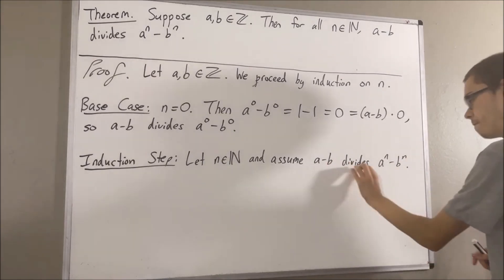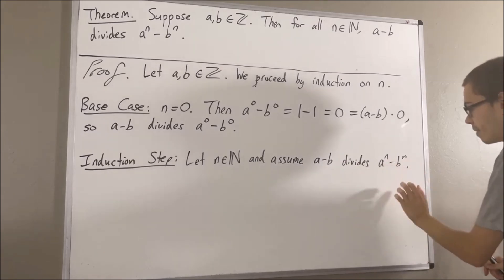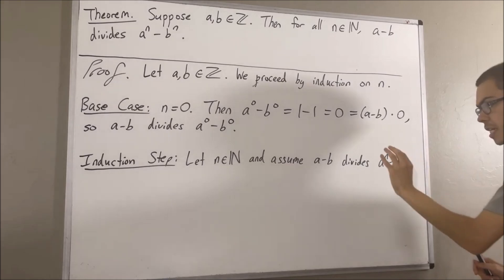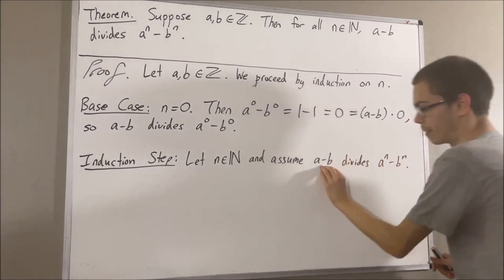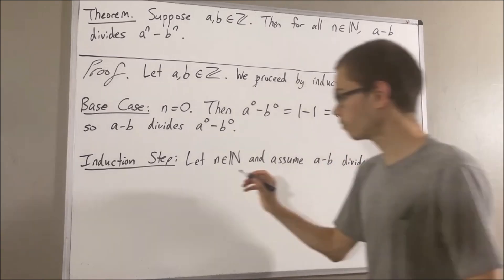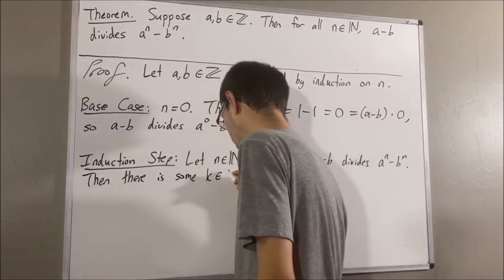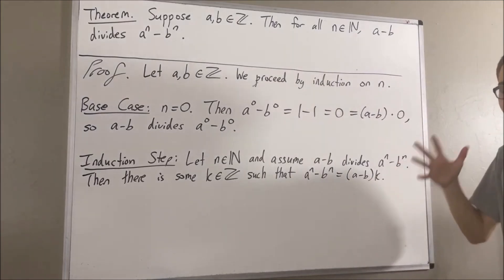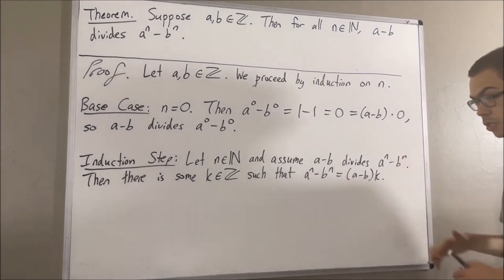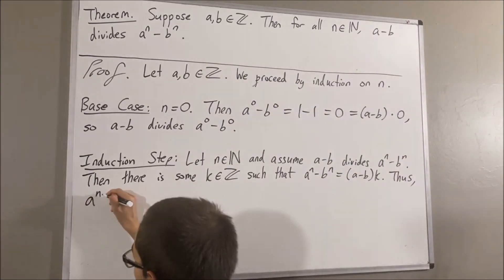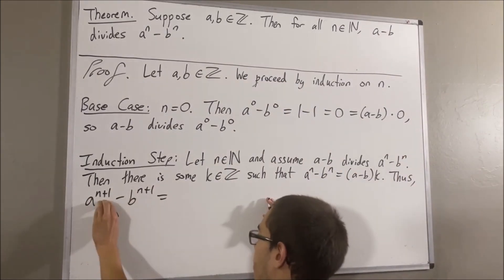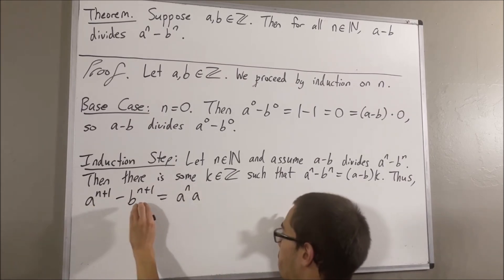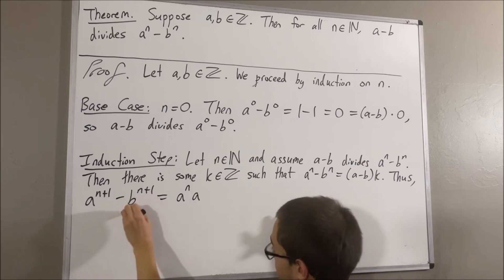Since A minus B divides A to the n minus B to the n, this means that there is some integer k such that A to the n minus B to the n is equal to A minus B times k. Now let me write out A to the n plus one minus B to the n plus one. We know that A to the n plus one is equal to A to the n times A, and B to the n plus one is equal to B to the n times B.